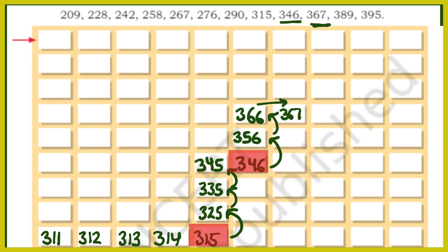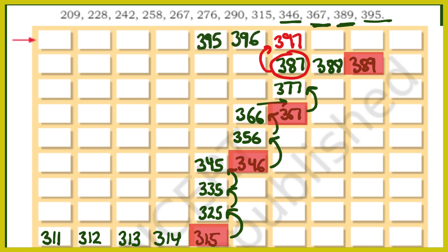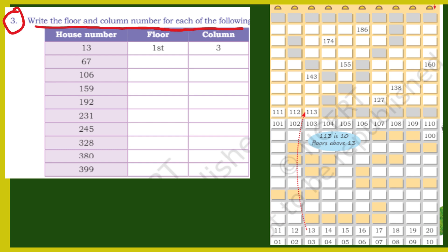फिर 389 — 367 के just उपर 377, फिर 387, 387 के one right 388, फिर one right 389. इस वाले room में deliver करेंगे. फिर 395 — 387 के just उपर 397, फिर one minus 396, फिर one minus 395. इस वाले room में deliver करेंगे. तो आपको बस basic concepts इसके याद रखने हैं और सब कुछ easy हो जाएगा.